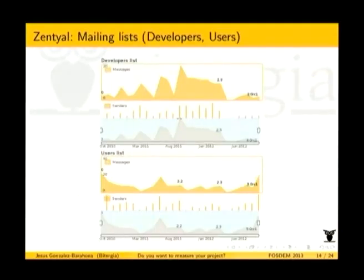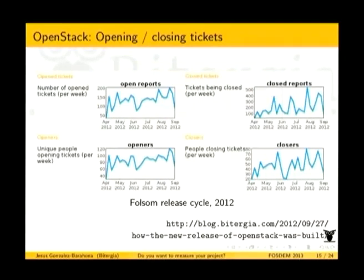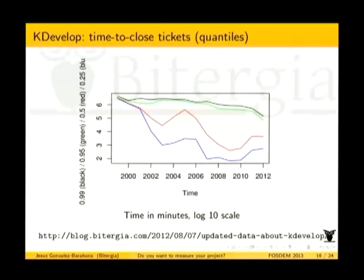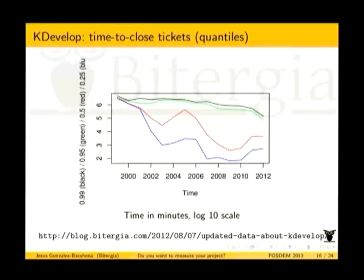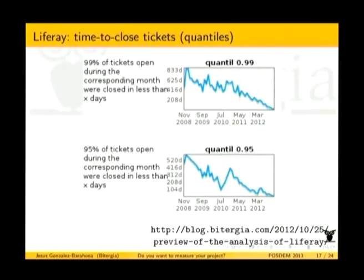This is the mailing list analysis — evolution of senders, receivers, and so on over time. This next example is a screenshot of OpenStack showing how they are opening and closing tickets. The next one is about time to close tickets — this is for KDE. Each line represents how long they are taking to close 95% or 99% of tickets. This is the same information for LibreOffice in another presentation — the upper part shows how long they take to close 99% of the bugs for different periods of time.